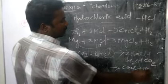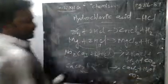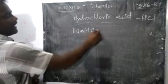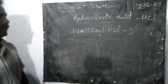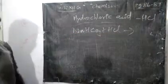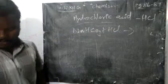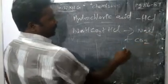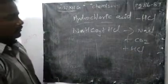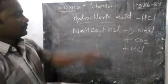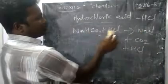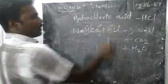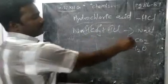Sodium bicarbonate (NaHCO₃) treated with hydrochloric acid produces NaCl, water, and CO₂. The hydrogen from HCl combines with oxygen to form water, CO₂ is released, and NaCl remains as the salt product.